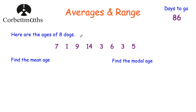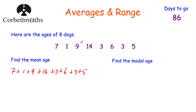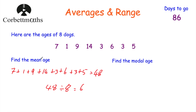Here are the ages of eight dogs: 7, 1, 9, 14, 3, 6, 3 and 5 years old. The first question says find the mean age. To find the mean, we add up all the values and divide by the number of values. So 7 plus 1 plus 9 plus 14 plus 3 plus 6 plus 3 plus 5 equals 48. Now divide by 8 values: 48 divided by 8 equals 6. So the mean age is 6 years old.